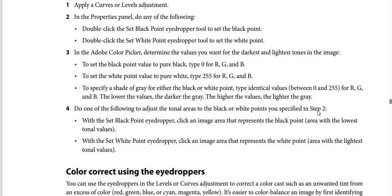Step number three: in the Adobe color picker, determine the values you want for the darkest and lightest tone in the image. To set the black point value to pure black, type zero for R, G, and B.